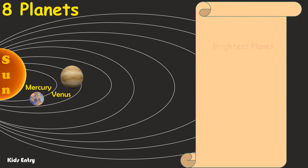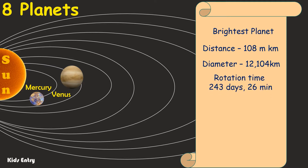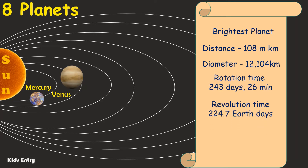Venus: the brightest planet in the sky. Distance from the Sun to Venus is 108 million kilometers. Its diameter is 12,104 kilometers. One day on Venus lasts 243 days, 26 minutes. One year on Venus lasts 224.7 Earth days. It does not have moons.